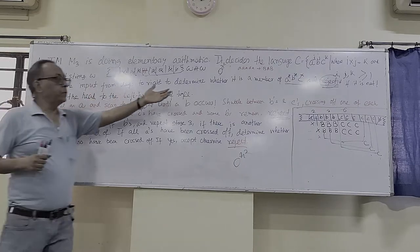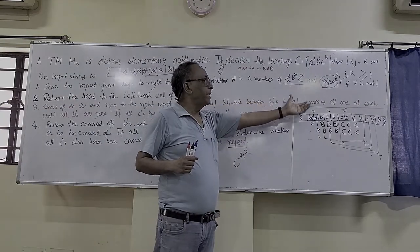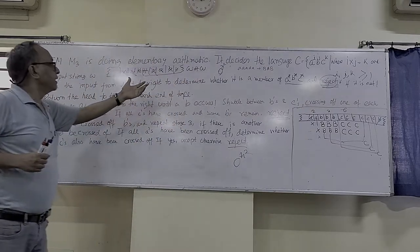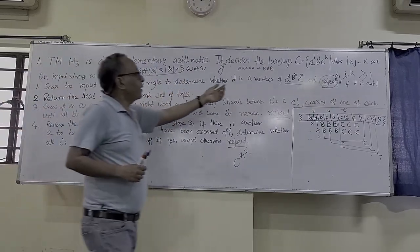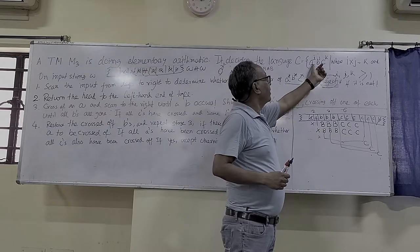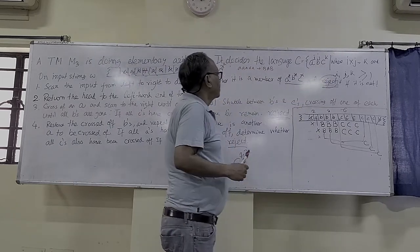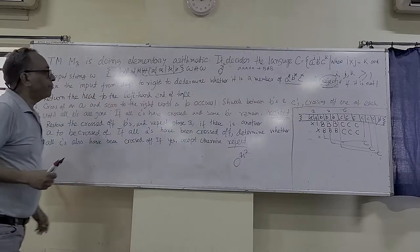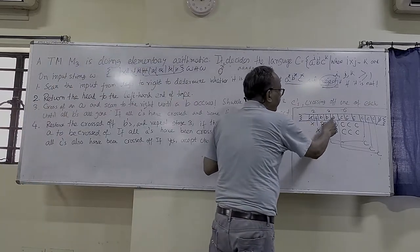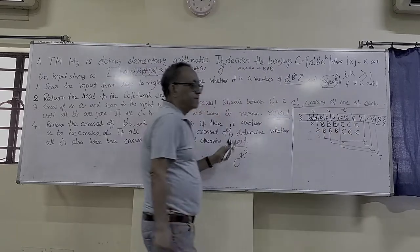Today we want to discuss multiplication. We have a language like A to the power i, B to the power j, C to the power k, where the number of A's times the number of B's equals the number of C's. So here we have two A's and three B's, so we must have six C's.